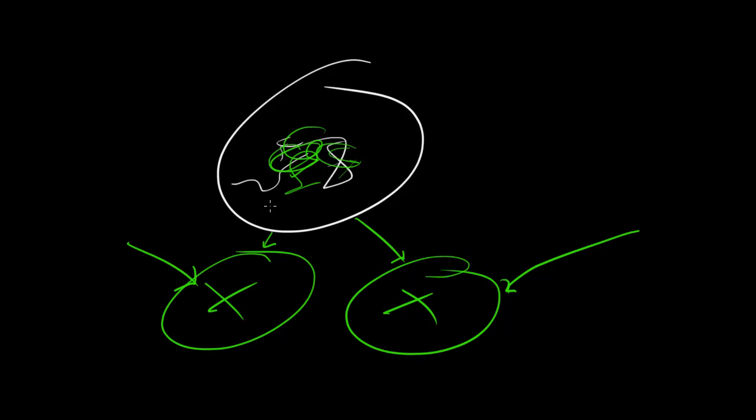So what it basically does is it makes copies of all its parts and then it divides, it makes two new cells. Now of course the process is a little bit more technical than that. It would be easy if you just say okay one cell becomes two, but actually it's a pretty complex process.